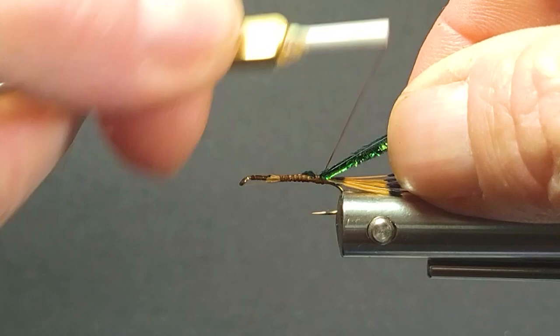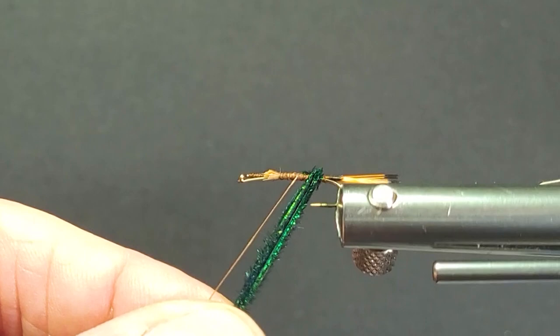That way when I handle peacock hurl it gets a little buggier. I'm just going to give it a little bit of a butt section there. Tie it off.